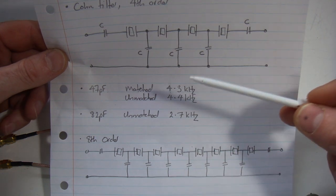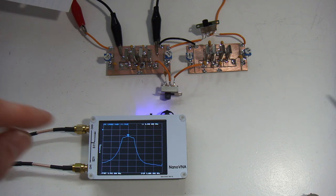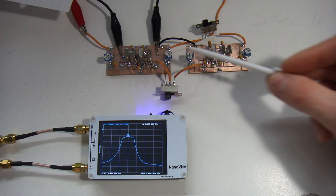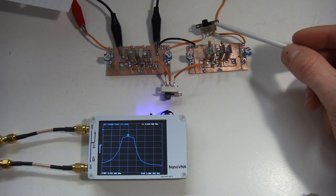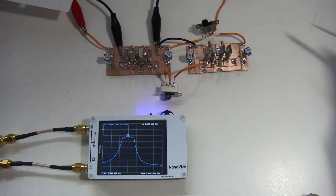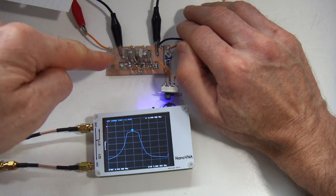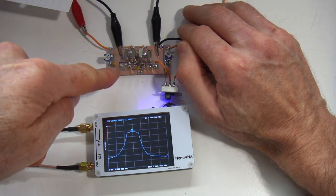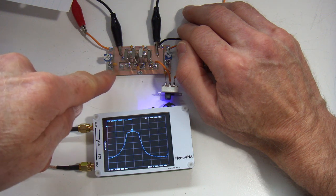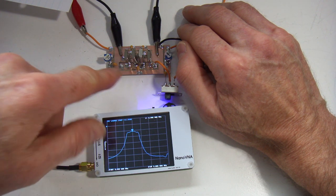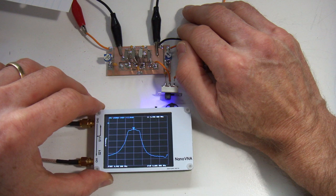Before going any further, that's what we're seeing here. What I've done, I'll talk about why there's a switch here later, but at the moment all we're looking at on the VNA is this filter here. It's a fourth order with four crystals, 82 picofarad capacitors, and that's the passband.